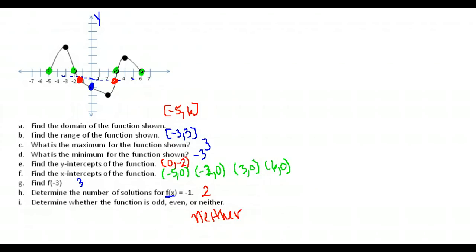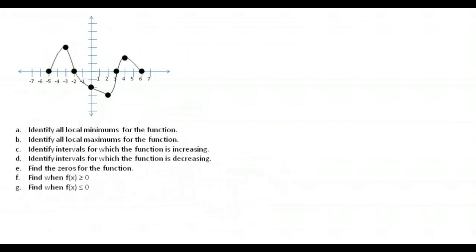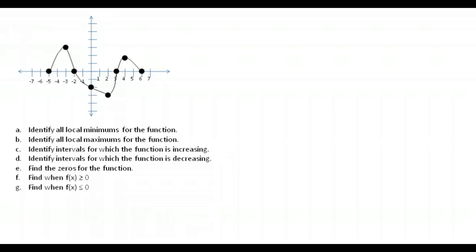Now let's do the second half of the questions for this same function. First, identify all local minimums. Minimum points are low points on the graph. The ends of the graph appear to be low points, but they can't be local minimums unless there are points on both the left and right that are higher. So we only have one local minimum — the point (2, -3).